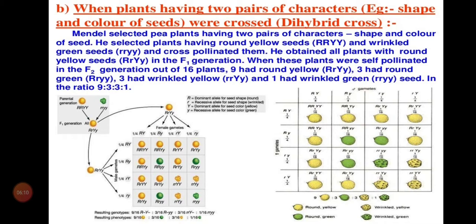Now we move on to today's topic: the dihybrid cross. 'Di' means two — he is taking two characteristics. In the monohybrid cross (Mendel's first law), he crossed only one character — round and wrinkled, or violet and white, or tall and dwarf. In the dihybrid cross, he took two characters from one plant and two characters from another plant. For example, he crossed a plant with shape and color of seeds — round yellow seeds crossed with wrinkled green seeds.